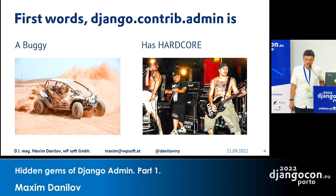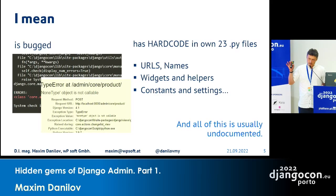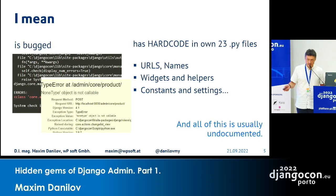First words: Django Contrib Admin is buggy and has hard-coded elements. What I mean is that in Django Contrib Admin, we have many hardcodes. Everything is hardcoded — URLs, names, variables, constants, settings — all of it is in the code. If you want to change something, you should override it. And of course, none of that is documented. Completely undocumented.